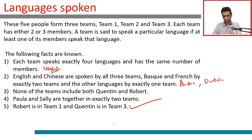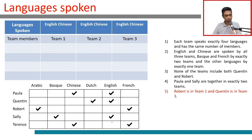Let's start with the last constraint. We have 3 teams, and we don't know how many members each team has, but we know it's the same number. Each team speaks exactly 4 languages. Robert is in team 1 and Quentin is in team 3.